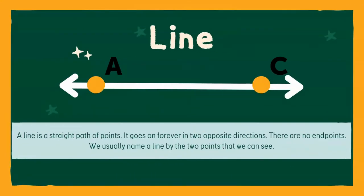The next one is called a line. And a line is a straight path of points. So all the points that are lined up in a straight path is called a line. A line goes on and on forever in two opposite directions — one goes to the right, one goes to the left, one goes up, one goes down. The points always go in the opposite direction. And there are no end points in a line. It just keeps going on forever.